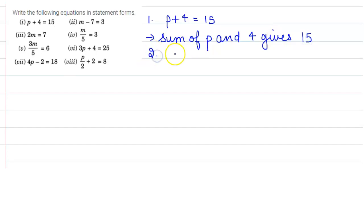Second one is M minus 7 is equals to 3. So this can be written as 7 subtracted from M gives 3.